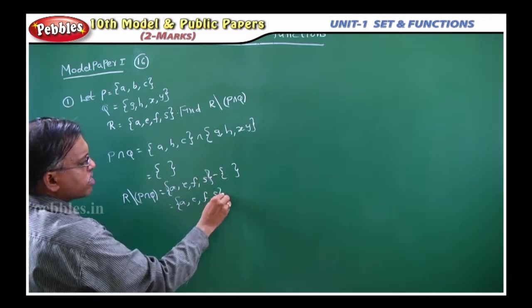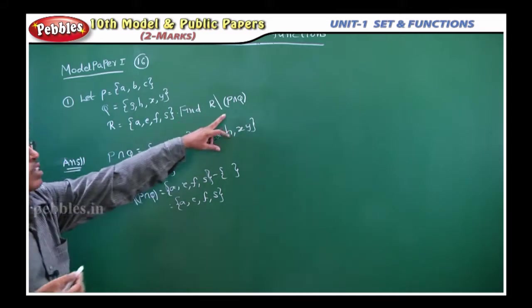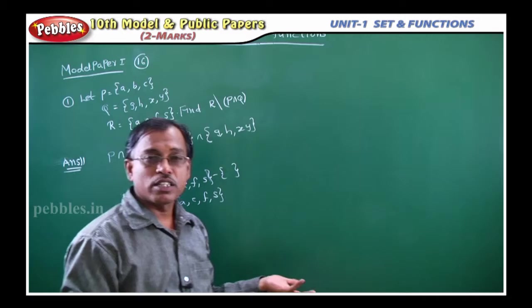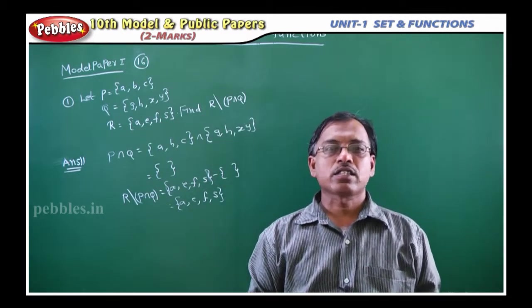So very easy. Just find P intersection Q, then R different P intersection Q, and we'll get the answer. That is it. Now, we will see the next problem.